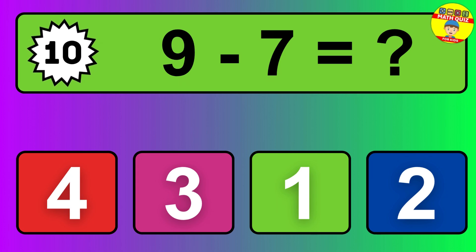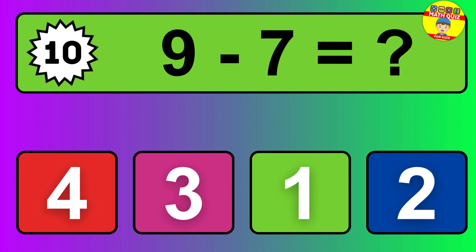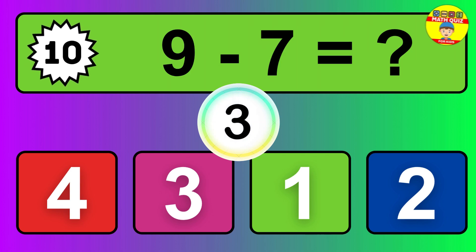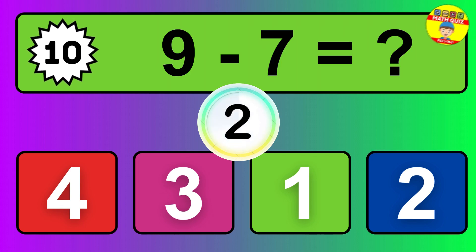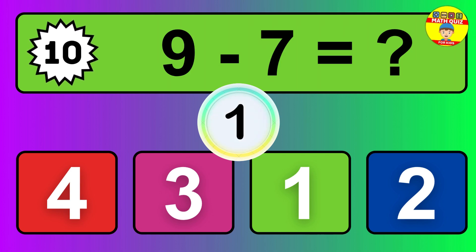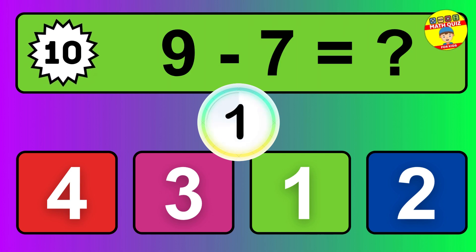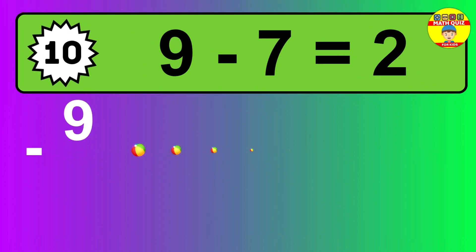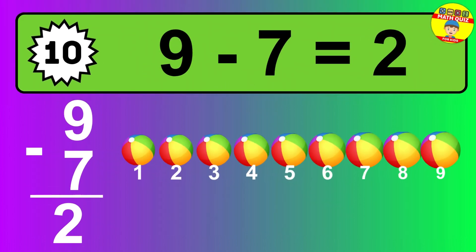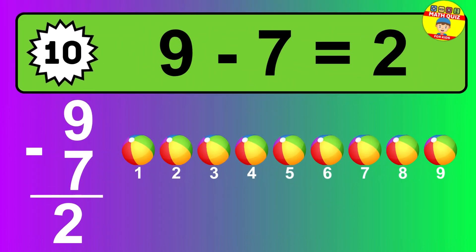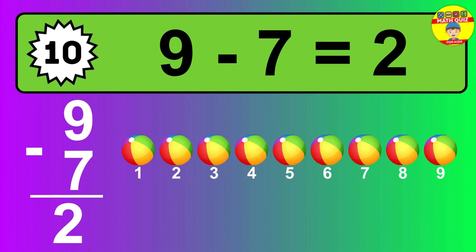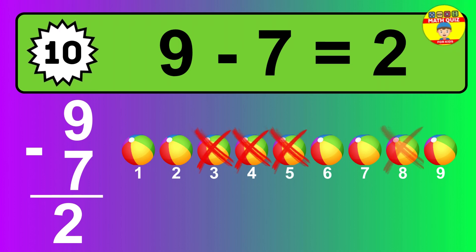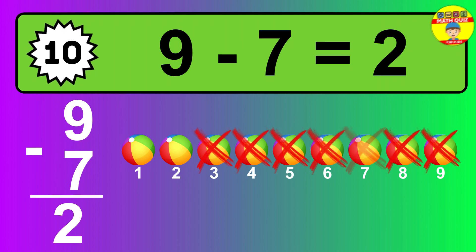Question 10. 9 minus 7 equals what? The answer is 9 minus 7 is 2. Let's count it: 1, 2.